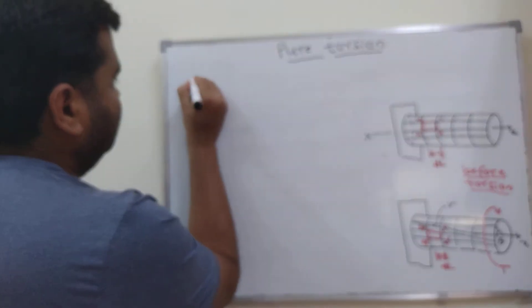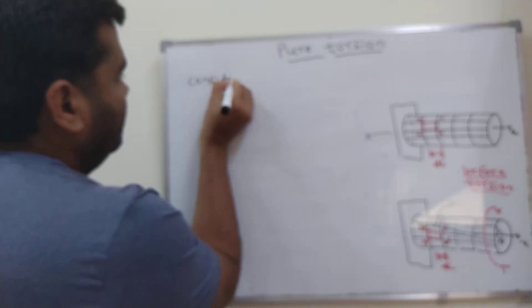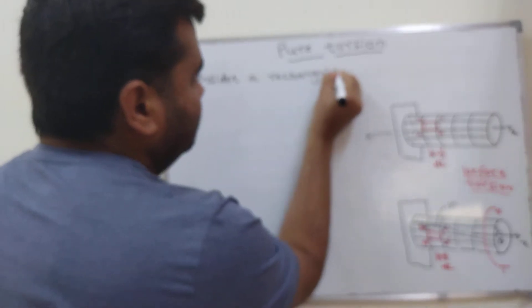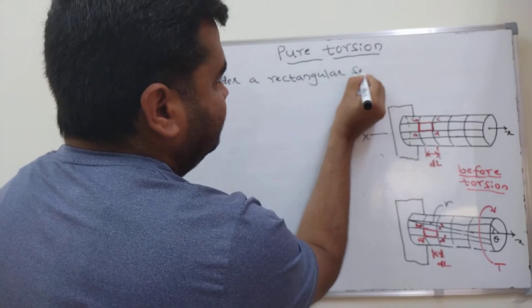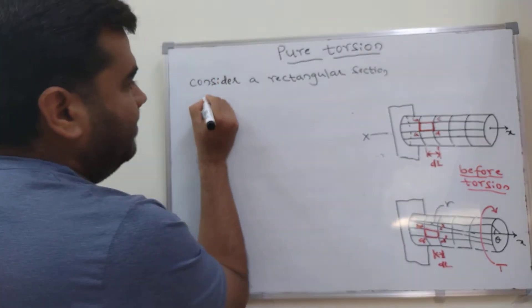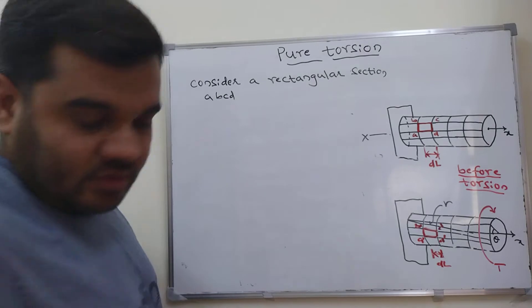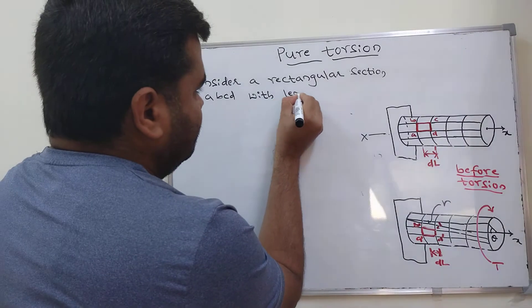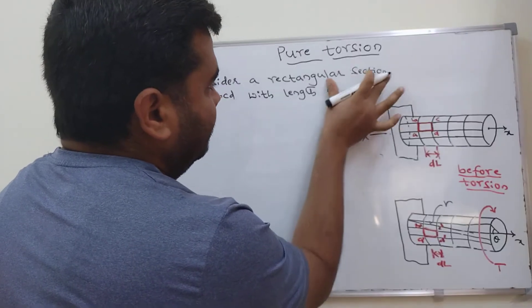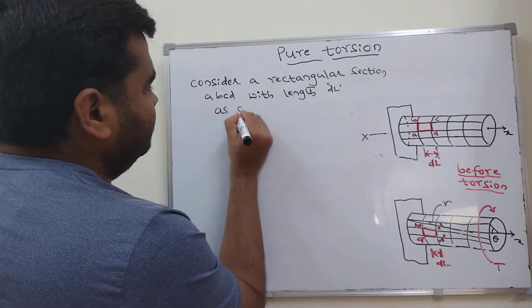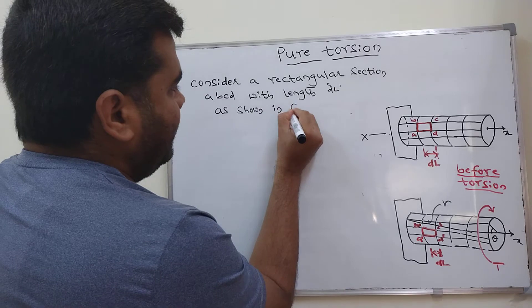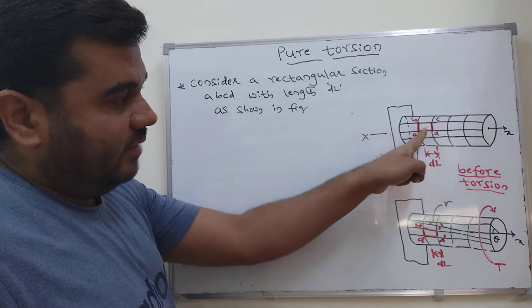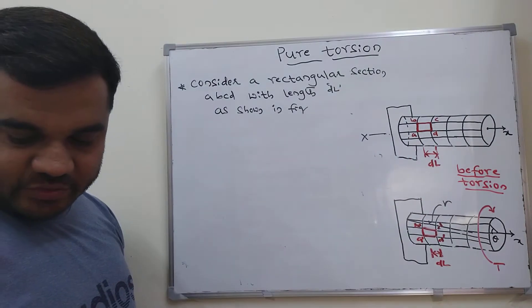Consider a rectangular section A, B, C, D having a length DL, as shown in the figure.